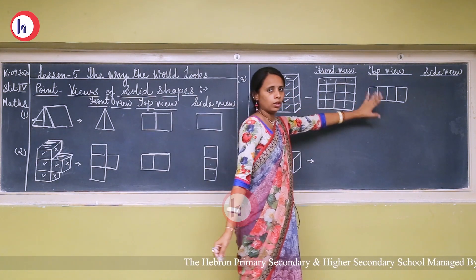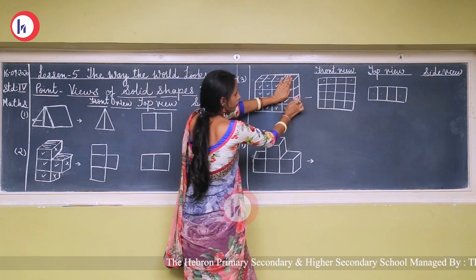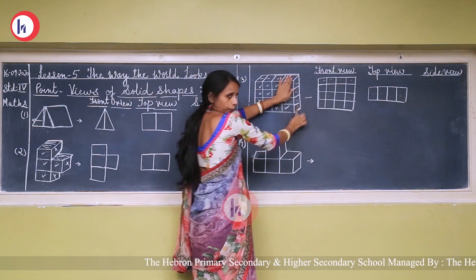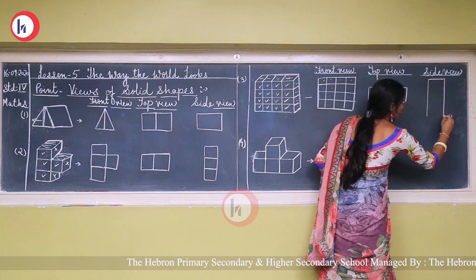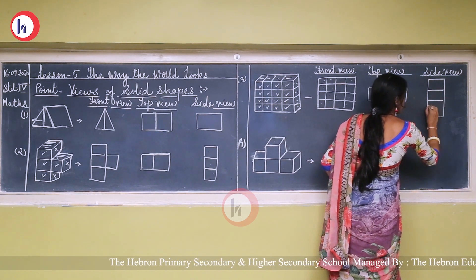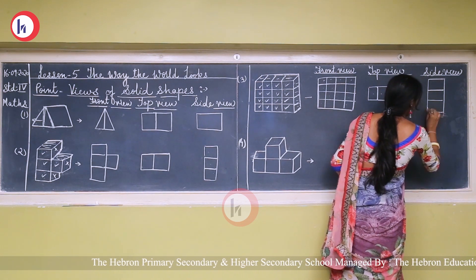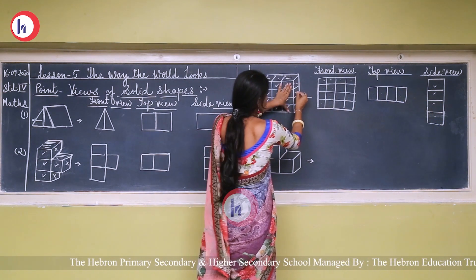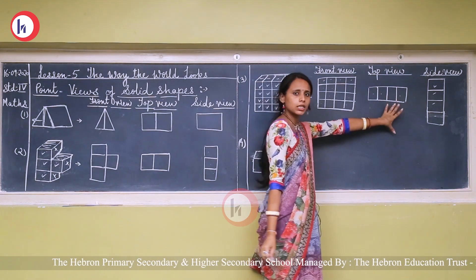And the side view. Look at the side only — 1, 2, 3, and 4. In this way we draw the side view: 1, 2, 3, and 4. So we have front view, top view, and side view.